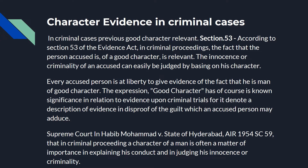Good character in criminal cases, even though it is admissible, is weak evidence. However, in certain cases, good character may become favorable evidence in favor of an accused in doubtful cases and where the prosecution fails to prove the guilt of the accused beyond reasonable doubt. Good character presumably includes good reputation, which a man may have in his own circle, as well as his real disposition as distinct from what his friends and neighbors may think of him. The principle upon which good character may be proved is that it affords a presumption against the commission of crime. This presumption arises from the improbability. However, character evidence is a very weak form of evidence.